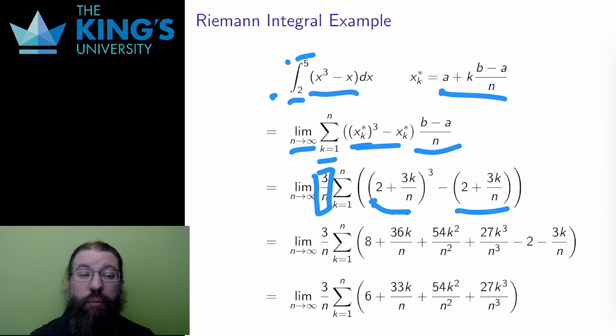The 3 over n can come out of the sum, because n is a constant as far as the sum is concerned. Then I need to do some algebra. I have a binomial to cube. To expand this, I would need to write it out three times and distribute, foil out if you wish, all the multiplications. I haven't shown this algebra, but the result is 8 plus 36k over n, plus 54k squared over n squared, plus 27k cubed over n cubed. Then I subtract the 2 and the 3k over n to get this expression.